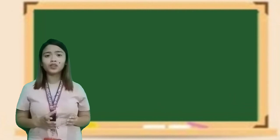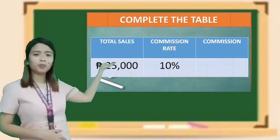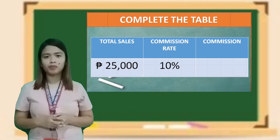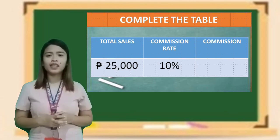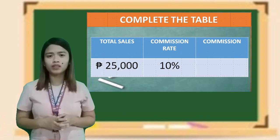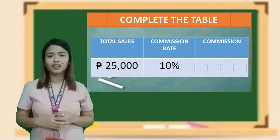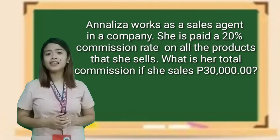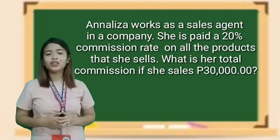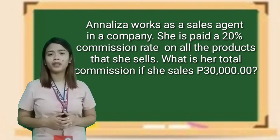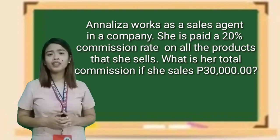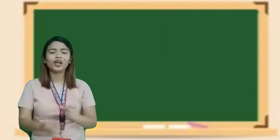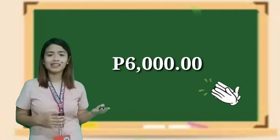Now it's your turn to solve commission. Please complete the table. The total sales is twenty-five thousand pesos, and the commission rate is ten percent. So what is the commission? The commission is two thousand five hundred pesos. Annalisa works as a sales agent in a company. She is paid a twenty percent commission rate on all the products she sells. What is her total commission if she sells thirty thousand pesos? The answer is six thousand pesos.